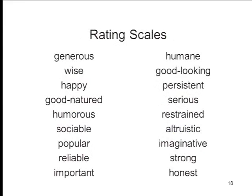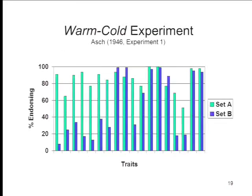Asch then asked subjects to rate that person on a series of rating scales where none of the stimulus words appeared — asking them to make inferences. Given what you know about the person, what else do you think they are like? What Asch found was that the two sets of adjectives gave rise to markedly different impressions. Set A in green, Set B in blue — for most traits there are big differences. Whether you describe somebody as warm or cold, holding all other information constant, made a big difference to the impression of the individual's personality.